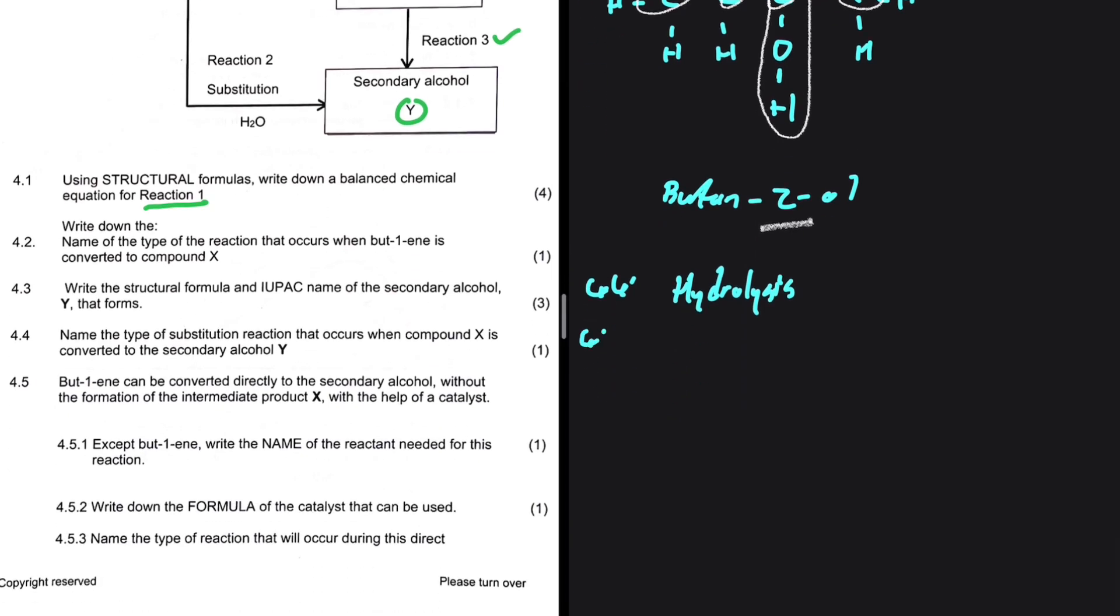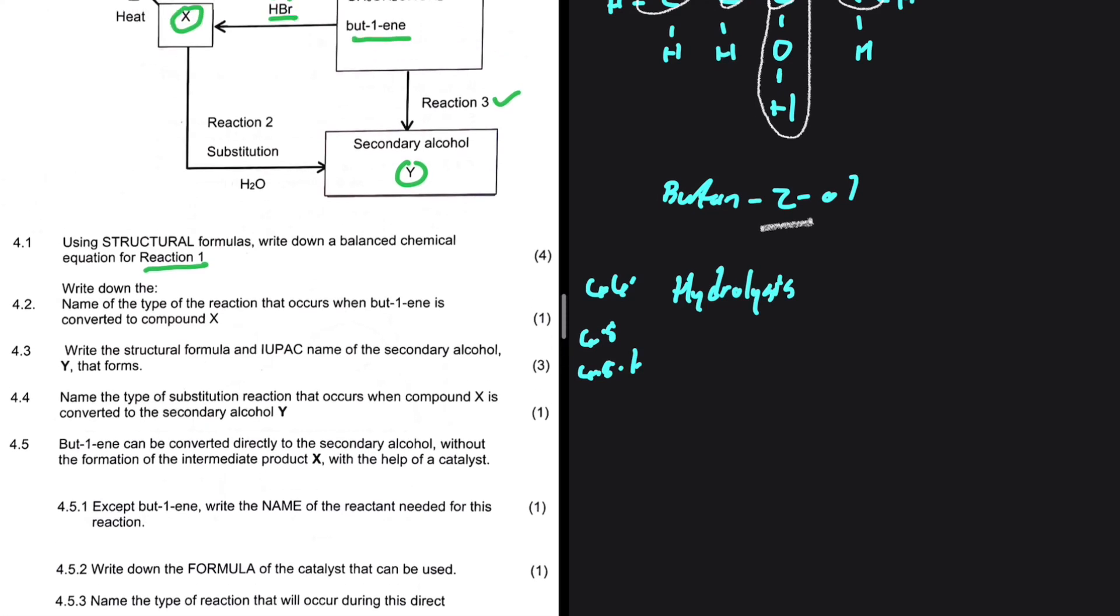4.5.1. Butan-2-ol can be converted directly to the secondary alcohol through the formation of the intermediate product X with the help of a catalyst. Except butan-2-ol, write the name of the reactant needed for this reaction. Well, a reaction that takes us from but-1-ene to the secondary alcohol is an addition reaction. What do you need to add to but-1-ene in order to have an alcohol as your product? You need to add H2O. But they say the name. So if you write H2O, it is wrong. Because H2O is not the name. The name is water. That is another trick to the question. Because if you write H2O, I'm telling you, your answer is wrong. You need to write water.